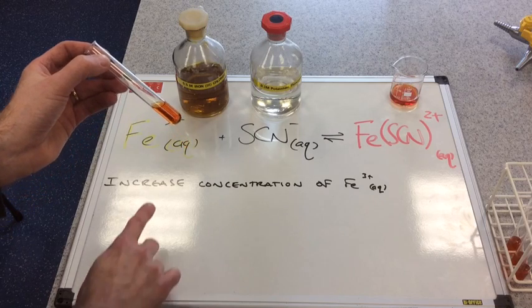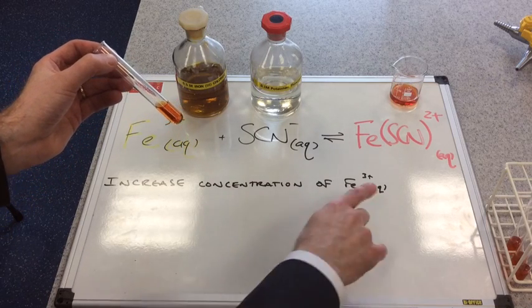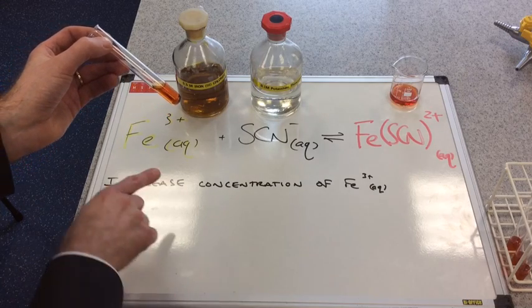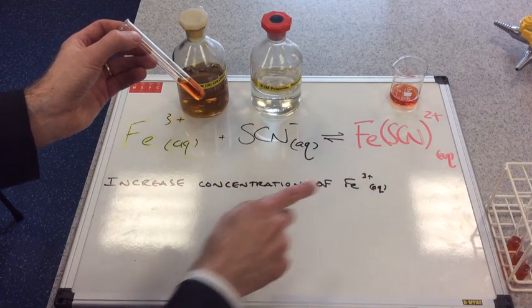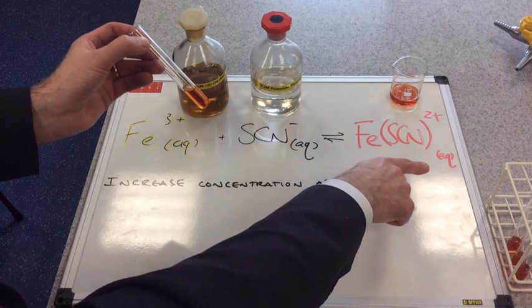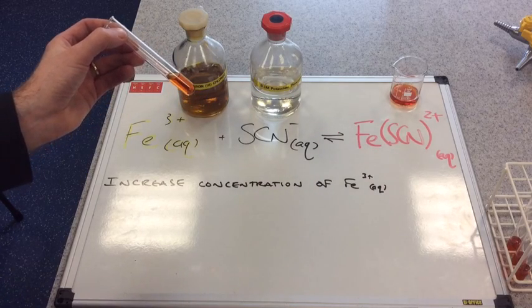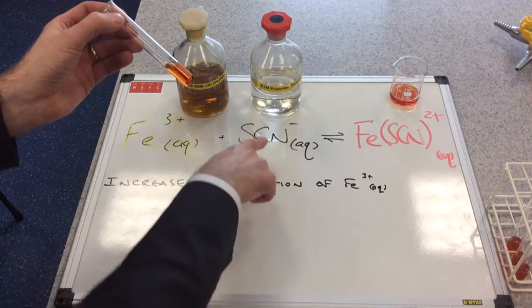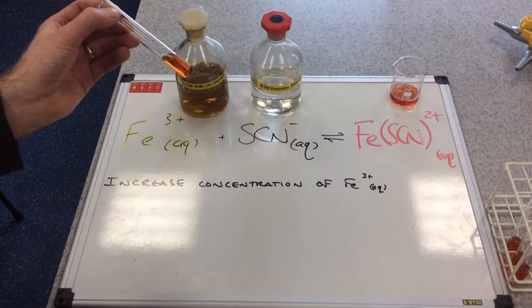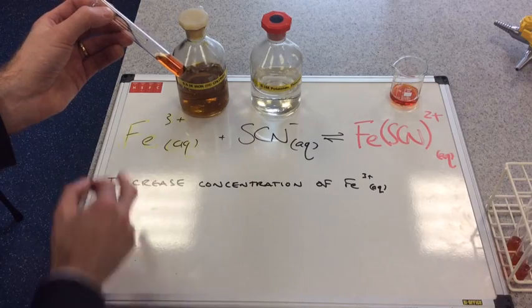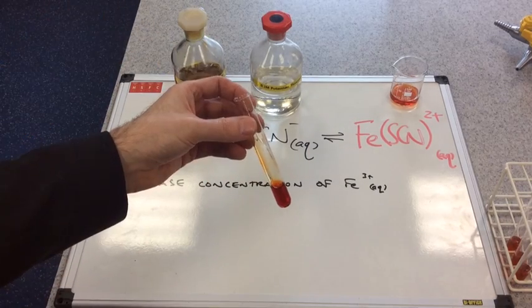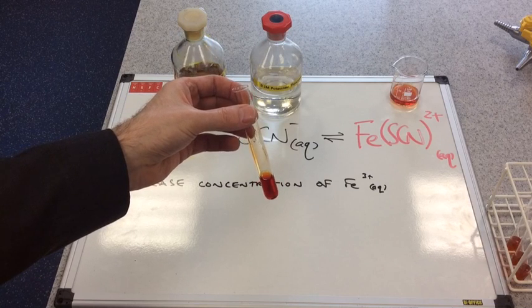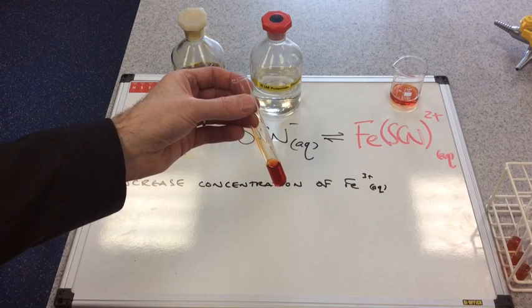The great thing about this equilibrium is the fact that we have these colors. So if the equilibrium moves to the right, it will get redder or darker. If the equilibrium moves to the left, we're going to have more of these substances present. That's colorless, that's yellow, it will get lighter. So here's the test tube. There's the result of the addition of this extra drop of iron 3 plus ions.